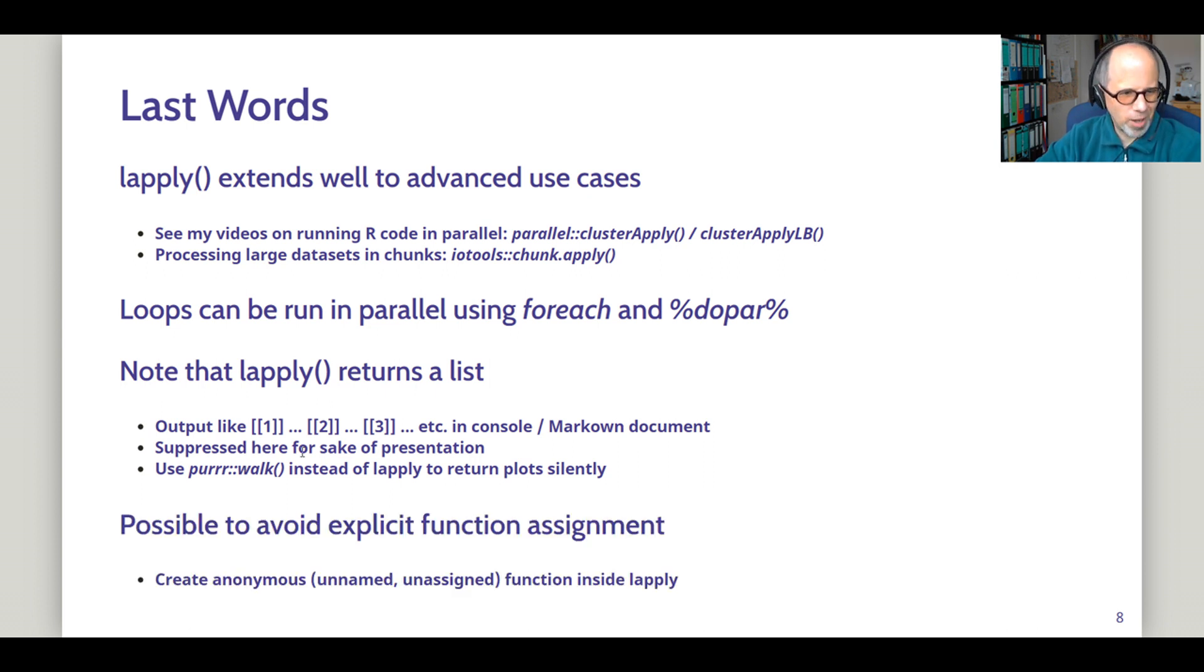And last remark, I used a separate function definition here. I called it myplot to use that in combination with lapply. Of course, you can avoid this assignment. You can use a so-called anonymous function, which is an unnamed function or a function that is not assigned to an R object and that is defined directly inside the lapply call. It's a question of readability maybe, but if there's a function that you just need once and you don't want to have it as an object in your global environment, you can use that approach.